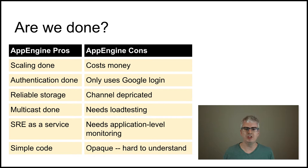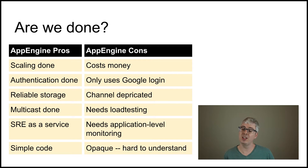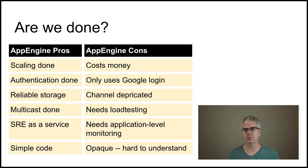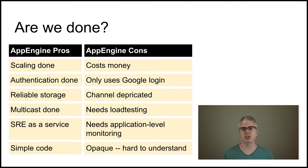There are some disadvantages. App Engine costs money if we use more than our free quota. You can only log in using the Google login mechanism. The channel mechanism we're relying on got deprecated shortly after I wrote the app — which goes to show that if you're relying on someone else's infrastructure, you should really understand how well-supported that infrastructure is now and in the future. We have to do some code rewriting to use a different API instead. We have no load testing written, and we should probably also have some application-level monitoring on top of the App Engine SRE monitoring to make sure our application is performing correctly at all times.